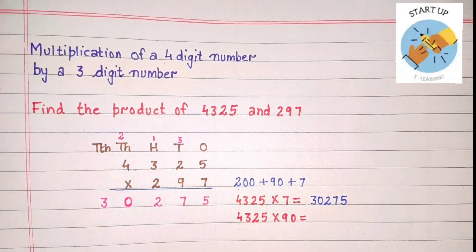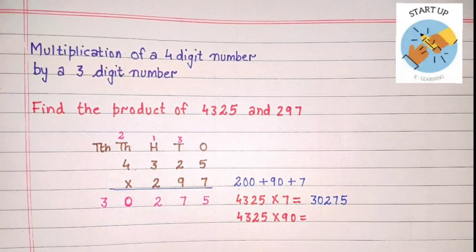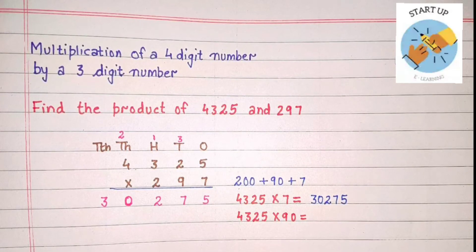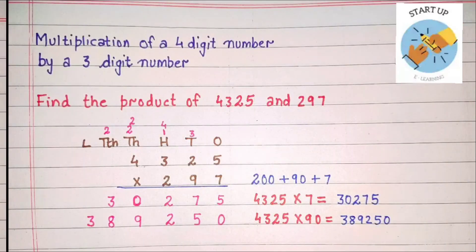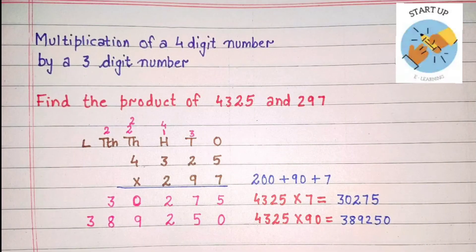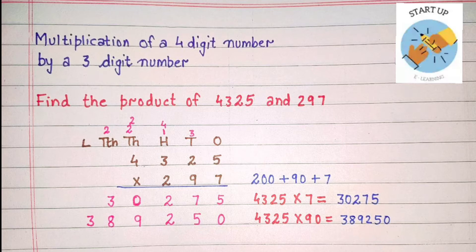Now 4325 will be multiplied by the digit at the tens place, that means multiplied by 90. We will put a zero at ones place because we are multiplying by the tens place digit.